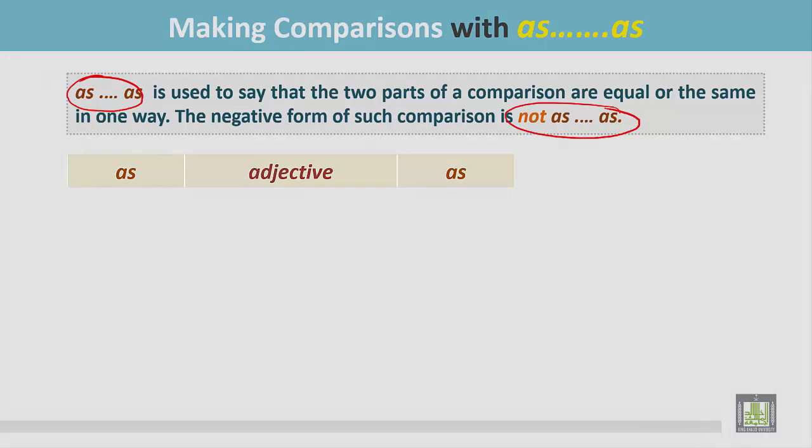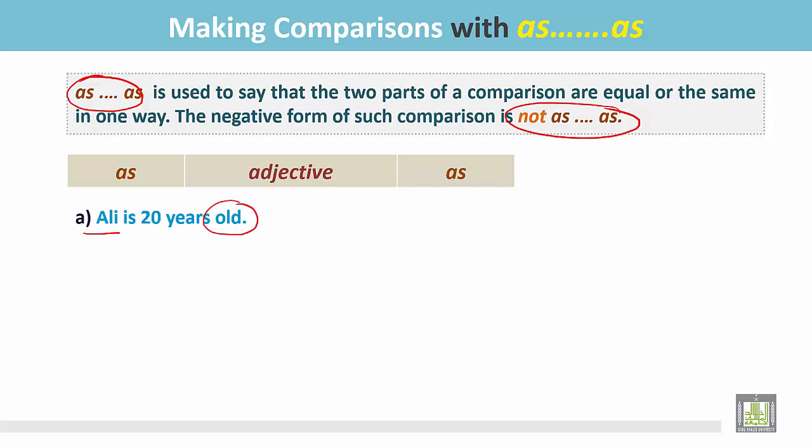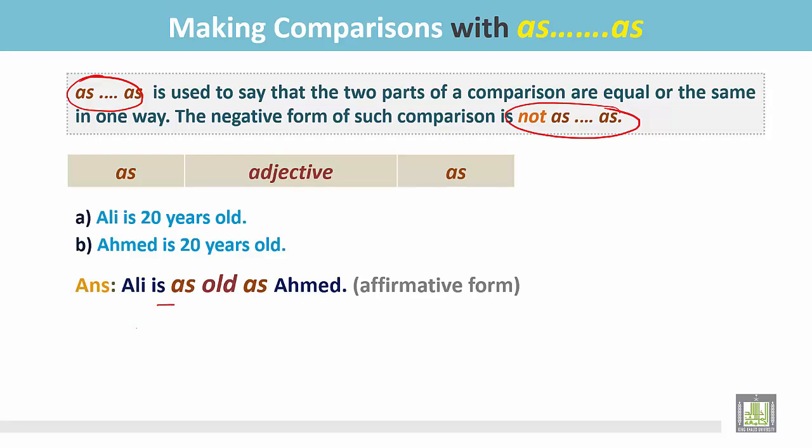See the structure as adjective as. Ali is 20 years old - this is the subject and here is the adjective old. Another sentence, Ahmed is 20 years old. In these two sentences, both subjects are of the same age. If we compare this, we write: Ali is as old as Ahmed. This is in the affirmative form.